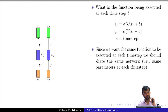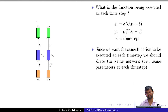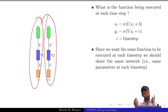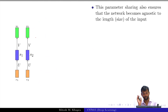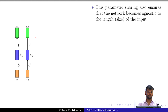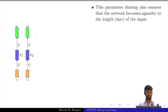Since we want the same function to be executed at each time step, we should share the same network at every time step — that means sharing the same parameters. This is the same as that because U, V, B, and C are the same. That is an easy way of taking care of the requirement that I want the same function executed at every time step. This parameter sharing also ensures that the network becomes agnostic to the length of the input.